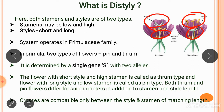The flower with short style and high stamen is called a thrum flower, while the flower with long style and low stamen is called a pin flower. Both thrum and pin flowers differ for six characters in addition to stamen and style length. Crosses are compatible only between styles and stamens of matching length — if the length of style and stamen match, self-pollination is possible. Since both flowers have different positions for stamen and style, they are self-incompatible.